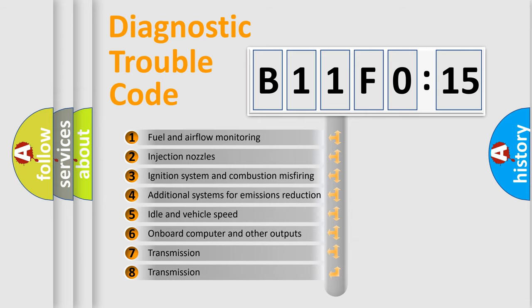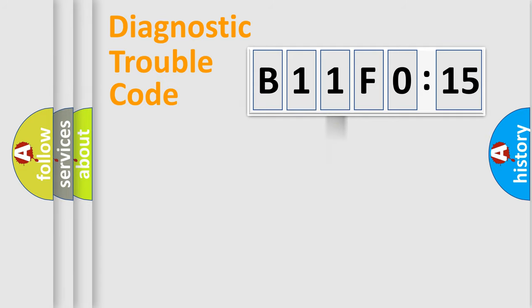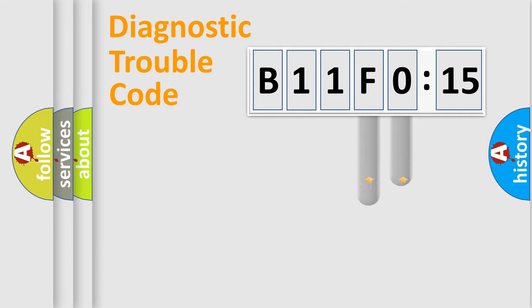The third character specifies a subset of errors. The distribution shown is valid only for the standardized DTC code. Only the last two characters define the specific fault of the group.